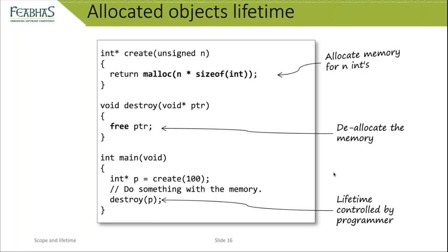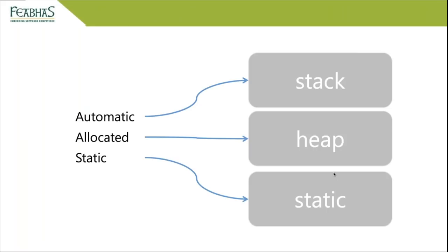For allocated memory, the lifetime starts when you call malloc and persists until you call free. Note that free requires the pointer parameter — it should have rounded brackets. That gives us the three different types of program objects: automatic, allocated, and static. The 'auto' keyword in C is where automatic gets its name — it is redundant and should arguably be deprecated. The 'register' keyword is similarly redundant.